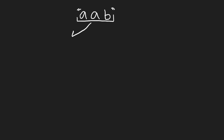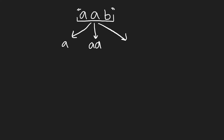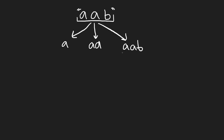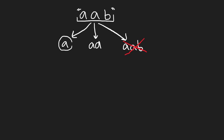So for the first partition, we have three choices. The first partition can either be 'a' by itself — just the first character — or double 'aa' taking the first two characters, or the entire string 'aab' as our first partition. We check if 'aab' is a palindrome by comparing first and last characters. They're not equal, so this is not a palindrome and we don't continue on this branch.